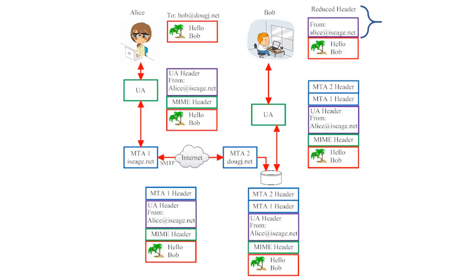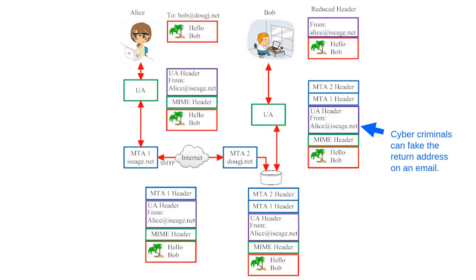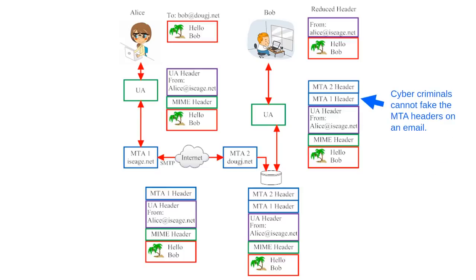However, user agents will allow you to see the full header if you ask for it. You could try this with one of your own emails — open an email and look for an option that says something like 'View Full Header' or 'Display Message Details.' Normally, you wouldn't have much reason to be interested in these headers, which is why most modern user agents hide them. But sometimes they are useful. For example, cybercriminals will sometimes send forged emails that pretend to come from a trusted source — like your workplace, or your grandma. If you learn to read email headers, you can check which Message Transfer Agents the email originated from. Cybercriminals can fake the return address on an email, but they cannot fake the MTA headers. So if you receive a suspicious email, you can check the detailed header to determine whether it really came from the same MTA as your contact's other emails.